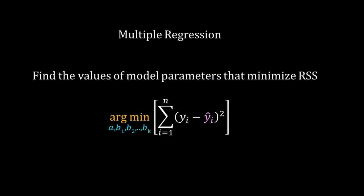Remember that in regression, we are minimizing RSS. So our regression algorithm finds the value of the parameters a, b1, b2 up to bk such that the RSS has the lowest possible value.